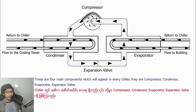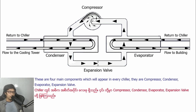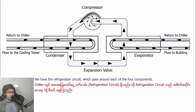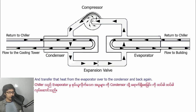These are the four main components which will appear in every chiller: compressor, condenser, evaporator, and expansion valve. We have the refrigeration circuit which passes around each of the four components and transports that heat from the evaporator over to the condenser.